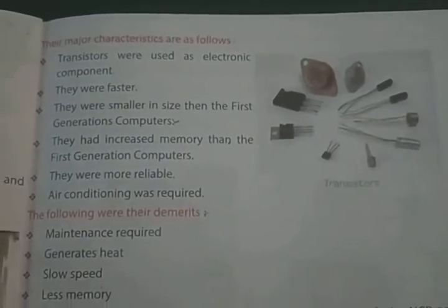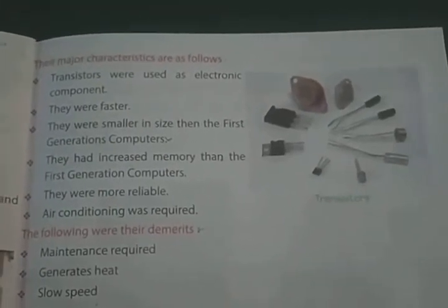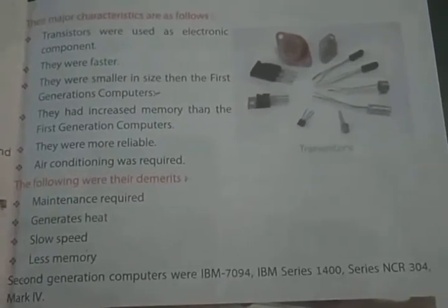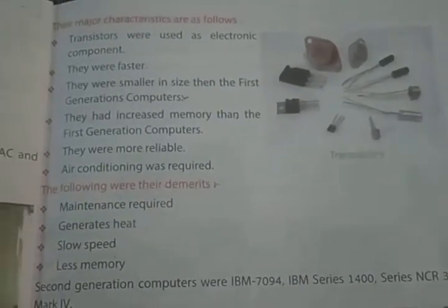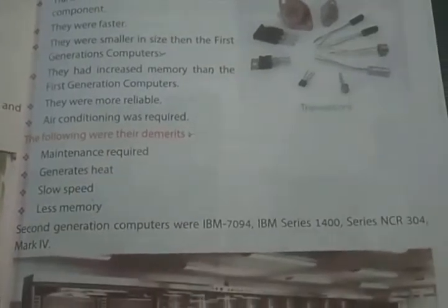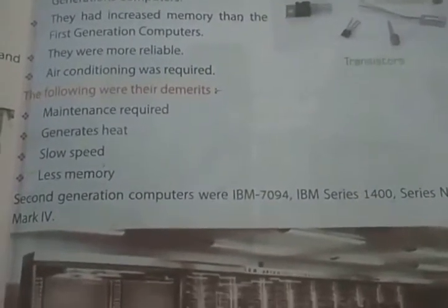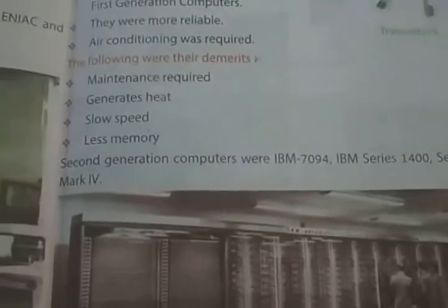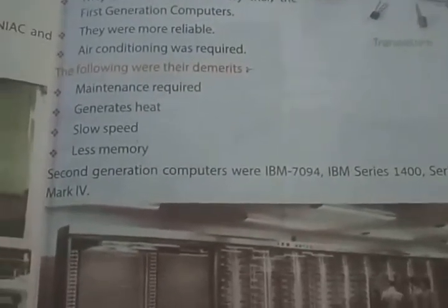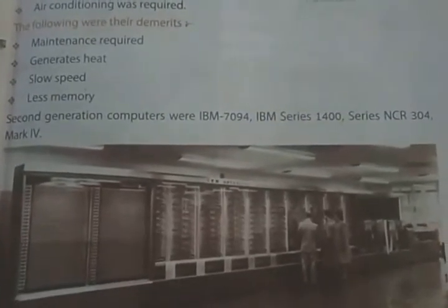Second generation computers were faster and smaller in size than first generation computers. They had increased memory compared to first generation computers and were more reliable. However, air conditioning was required. Demerits included: maintenance was still needed, they generated a lot of heat, speed was still slow, and memory was still less.